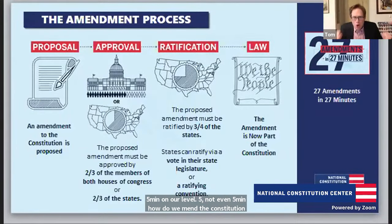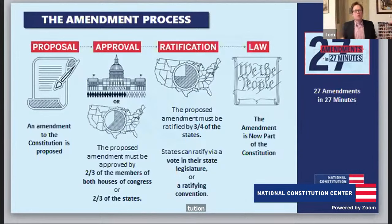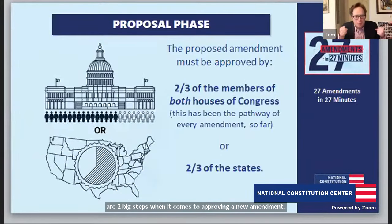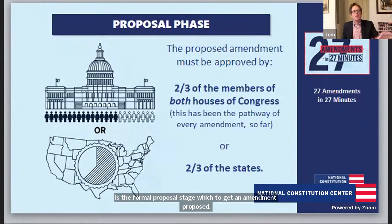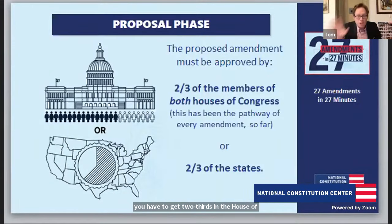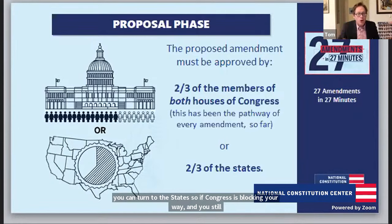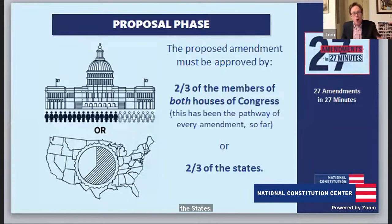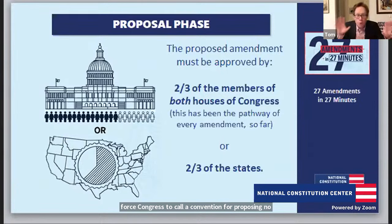The amendment process is written in Article V. There are two big steps: first is the formal proposal stage. To get an amendment proposed, you need support from two-thirds of the members of Congress in each House — two-thirds in the House of Representatives and two-thirds in the Senate. Alternatively, you can turn to the states: if two-thirds of state legislatures agree, they can force Congress to call a convention for proposing new amendments. Both paths require supermajority, two-thirds support.